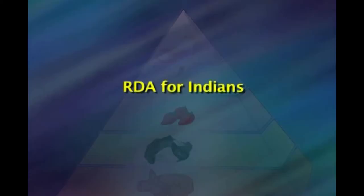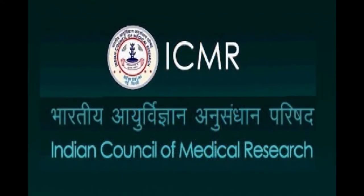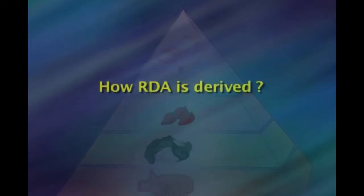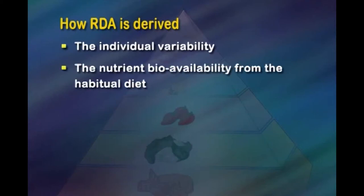Most countries derive their own set of dietary guidelines for requirements, which are periodically revised. Improved tools, methodology developments, updated understanding of nutrients, and updated databases necessitate revision. The guidelines for India were first drawn by ICMR in 1944 and revised in 2010. RDA is derived from individual variability plus the nutrient bioavailability from the habitual diet.